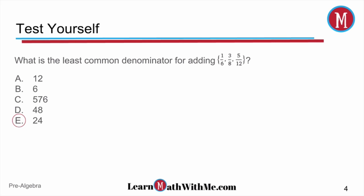What is the least common denominator for adding 1 sixth, 3 eighths, and 5 twelfths? So we want to take these three numbers, and we're going to have to find a common, the least common denominator, so we can add them up.